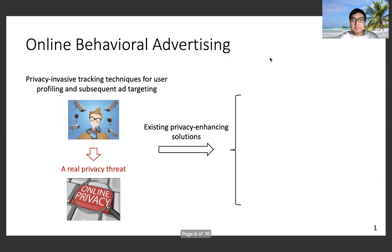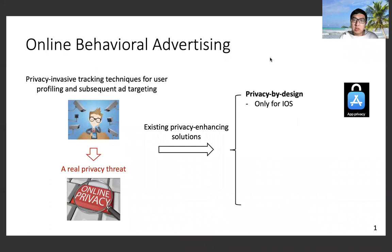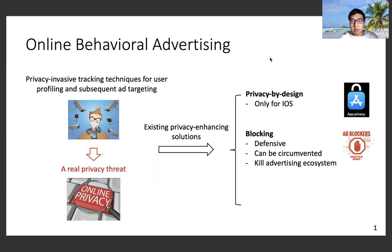Existing privacy enhancing tools can be classified into three types. The first type is called privacy by design, which is proposed by Apple. However, it can only be used for iOS systems. The second type of solution is called blocking, such as ad blockers. Blocking is a defensive method, but it can be circumvented by trackers very easily, and most importantly, it will kill the advertising ecosystem completely.